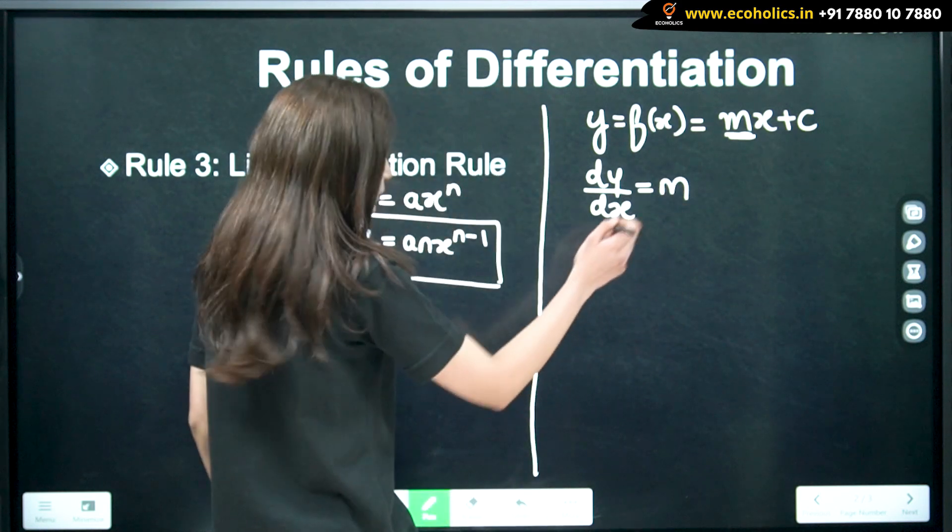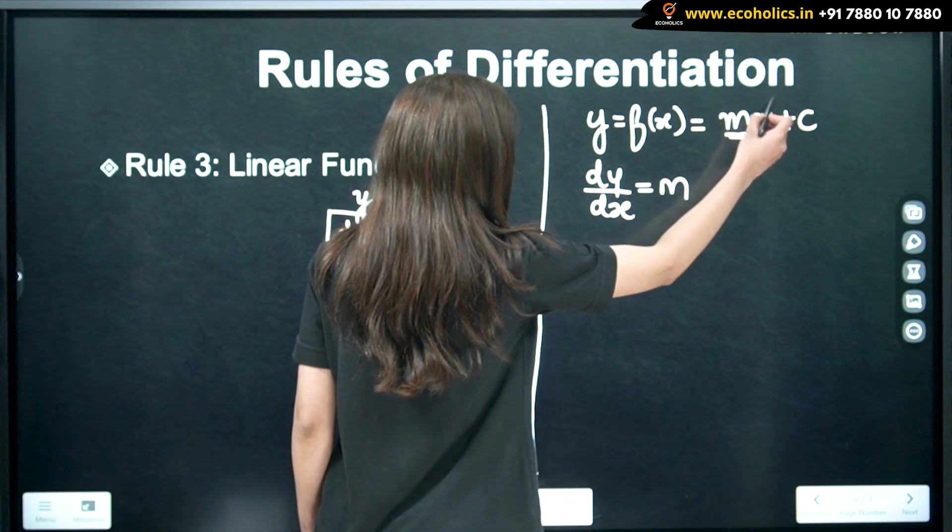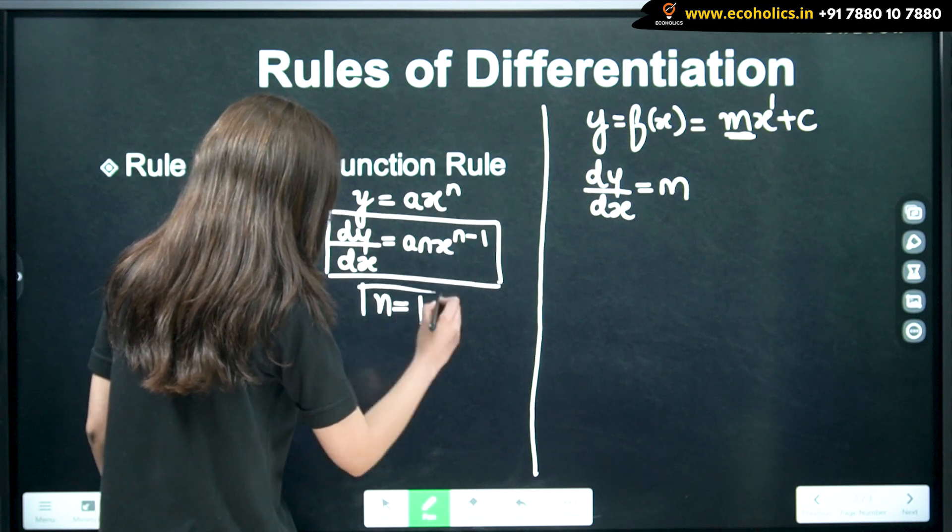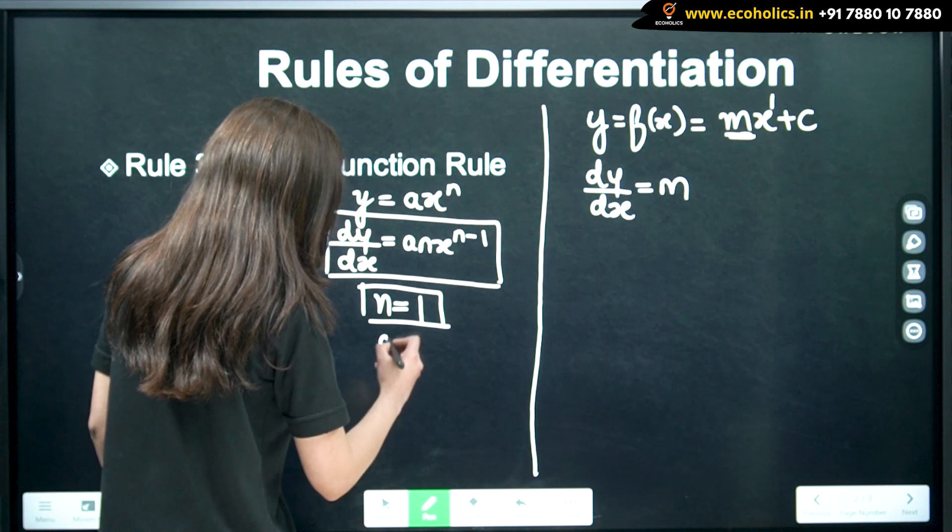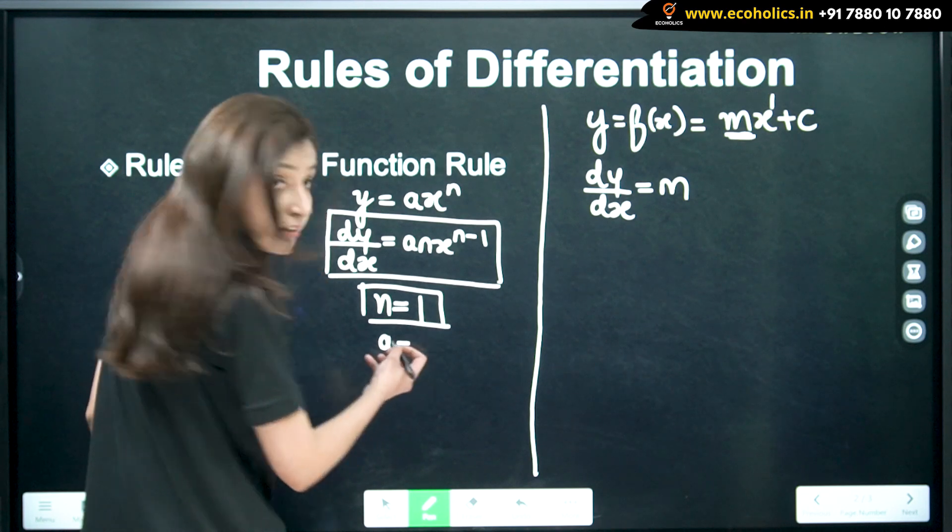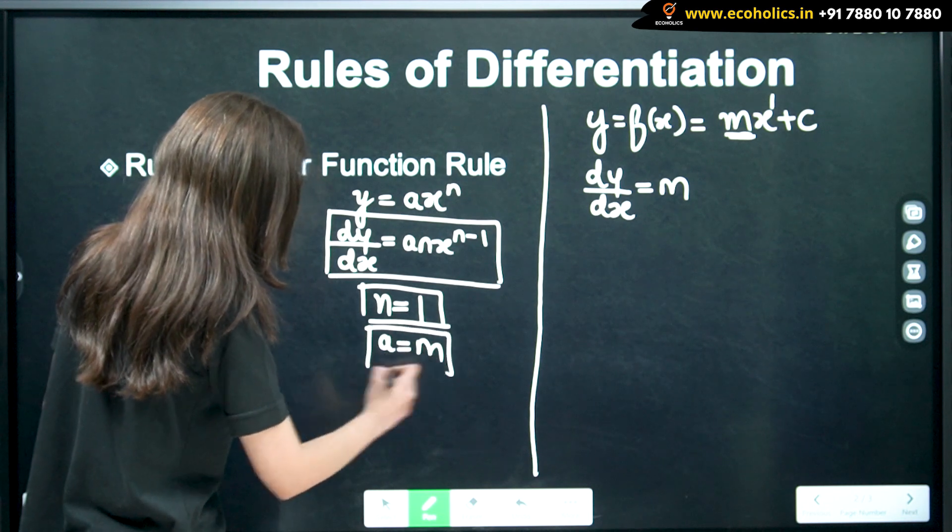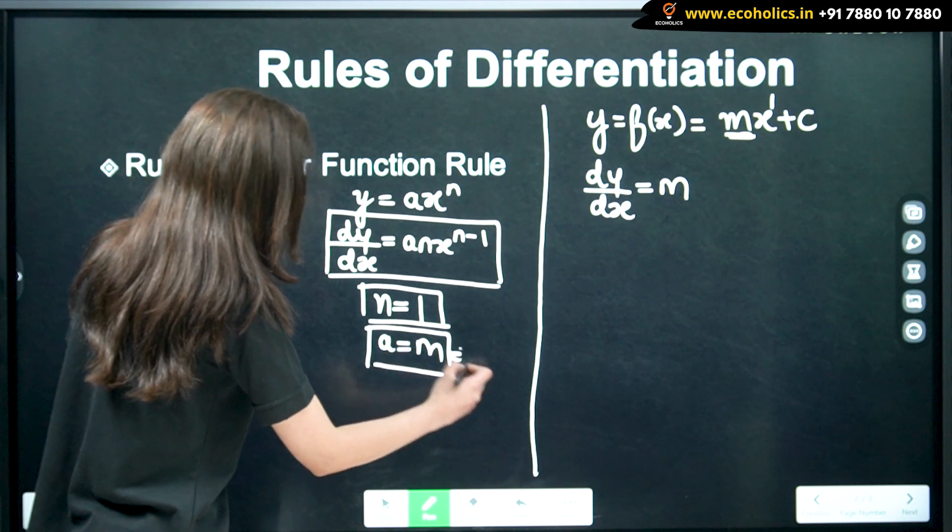So, what do we get? m. So, x raised to 1. In this case, n is equal to 1 and a, the constant term is m. A in this case is m. So, this is our constant term.